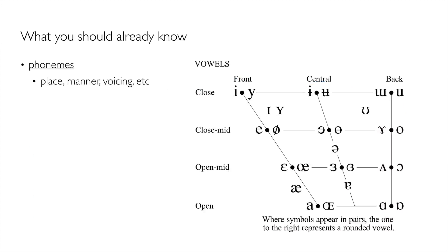We can describe vowels in a similar way. We can talk about the place in the mouth that the tongue is positioned — for example, is it near the roof of the mouth or down near the bottom — and how open or closed the vocal tract is. We can also talk about whether that positioning takes place near the front or the back of the mouth. These two dimensions, sometimes called height and front-back, characterize the vowel sounds. There's also a third dimension: we can make an additional contrast by slightly extending the length of the vocal tract by protruding the lips — that's called rounding.